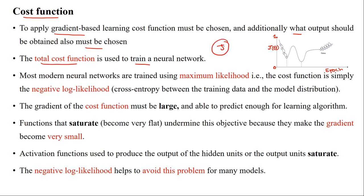The total cost function is used to train the neural network, calculated across all samples. Most modern neural networks are trained using maximum likelihood — that is, the cost function is simply the negative log likelihood, using the cross-entropy method. Cross-entropy is the loss function which is useful for classification problem statements.